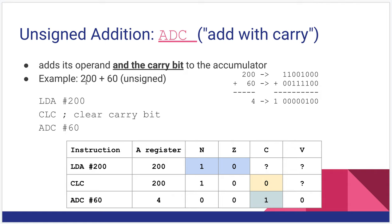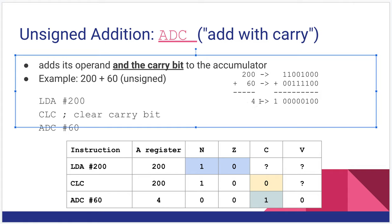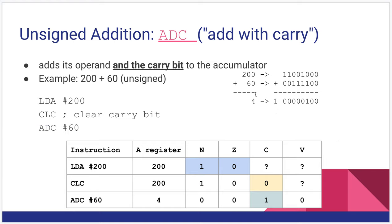So let's look at an example, this is 200 plus 60 in unsigned addition. I've written it out here to the side how we would do it on paper. 200 becomes this bit pattern, 60 becomes this bit pattern, and when you add them together you actually get a result of 4 in 8 bits with a carry of 1. So it does not become 260, the result is 4 with a carry of 1.